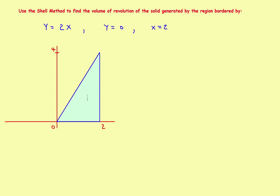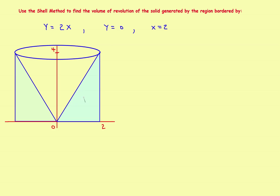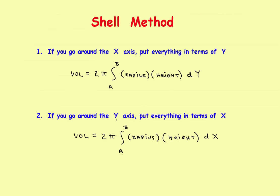Those three lines border a region. In this example, we'll find the volume by rotating this region around the y-axis, and the solid would look something like a swept volume. Since we're taking this one around the y-axis, we'll use the lower formula and put everything in terms of x, integrated with respect to x, or dx.